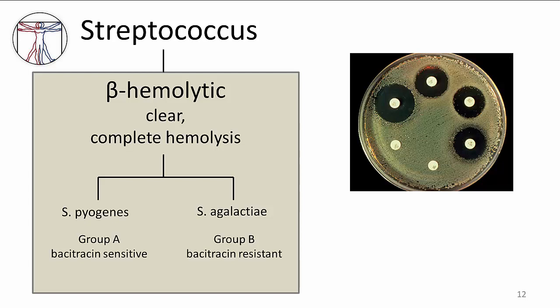Let's now discuss the beta hemolytic strep, which can be further classified into strep pyogenes, also called group A strep, and strep agalactiae, also known as group B strep. These species can be differentiated biochemically by their susceptibility to the antibiotic bacitracin. Strep pyogenes is the only beta hemolytic strep that is sensitive to bacitracin, meaning its growth will be inhibited by the disc. We perform this testing by placing the antibiotic-impregnated disc into an agar plate that has been inoculated with bacteria and allowing it to grow overnight. A clear circle called the zone of inhibition is produced around the disc when the organism is susceptible to the antibiotic. If it is resistant, as strep agalactiae is to bacitracin, growth near the disc is not inhibited at all.